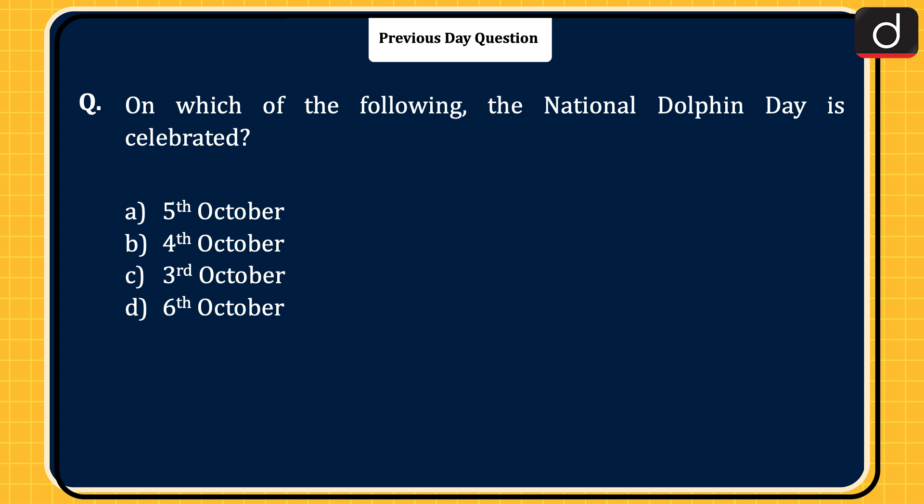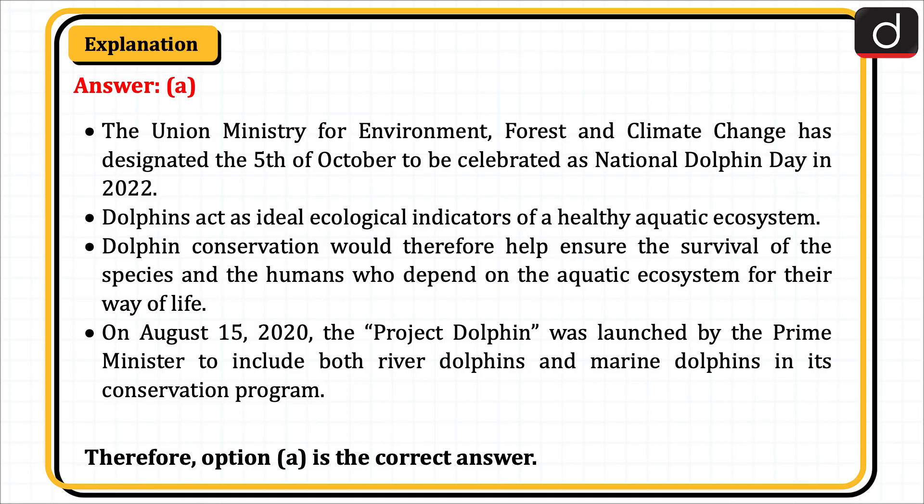The question was: on which of the following dates is National Dolphin Day celebrated? 5th October, 4th October, 3rd October, or 6th October? The correct answer is option A, 5th October. The Union Ministry for Environment, Forest and Climate Change has designated 5th October to be celebrated as National Dolphin Day in 2022.